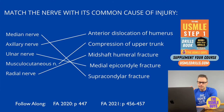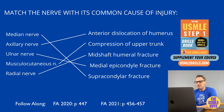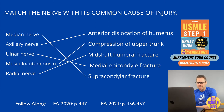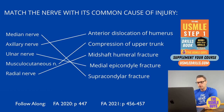Common radial nerve injuries occur from fractures to the proximal humerus, the shaft of the humerus, or the radius. Stab wounds to the antecubital fossa, wrist, or forearm are also common causes. Other causes include compression from using crutches, falling asleep with your arm over the back of a chair, or prolonged use of a tourniquet.